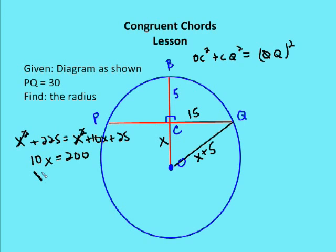So X is equal to 20. That means the radius OQ is equal to 20 plus 5, or 25. The radius is equal to 25. That's it for congruent chords. Come back and join us for some practice problems on congruent chords in the next edition of Otten Math.